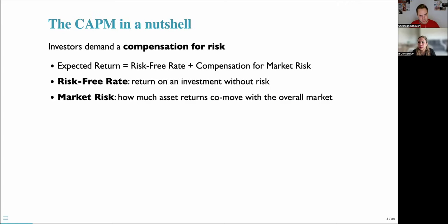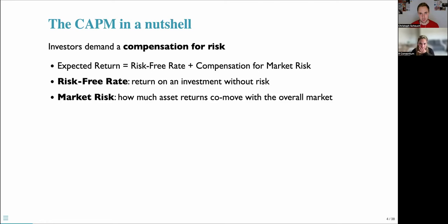To preview the CAPM in a nutshell: investors demand compensation for risk. As a result, the expected return of individual assets can be described as the sum of a risk-free return plus compensation for market risk. The risk-free rate is just a return on investment without risk — typically government bonds, or more specifically, T-bills in the United States. Market risk captures how much asset returns co-move with the overall market.